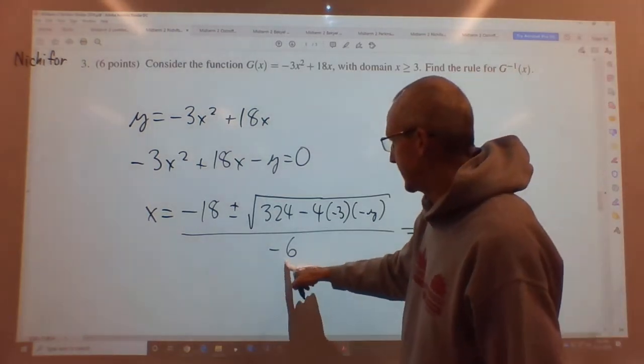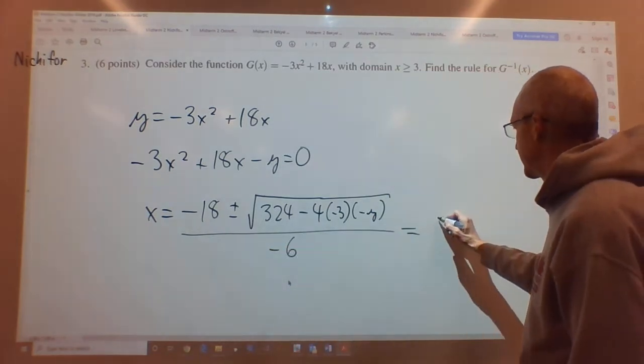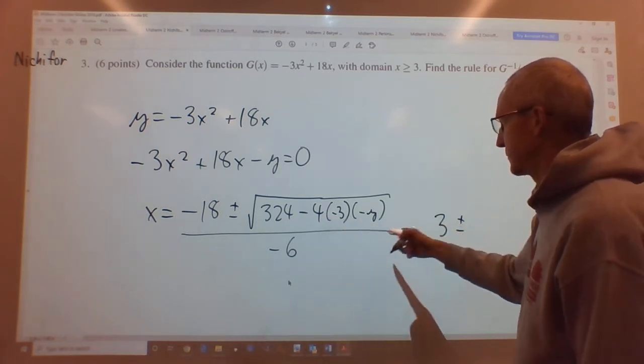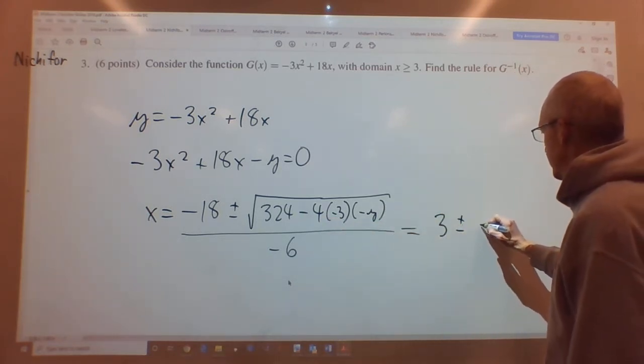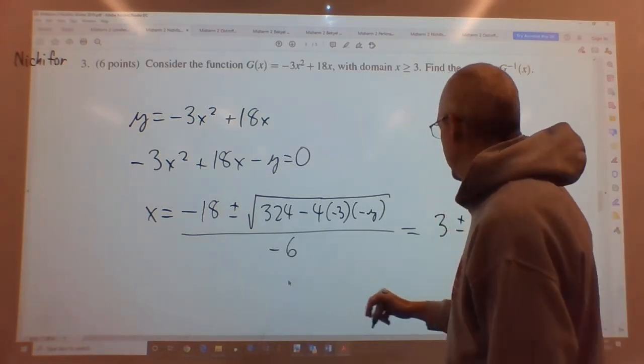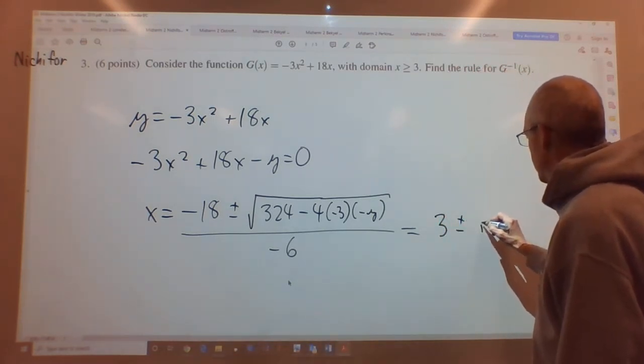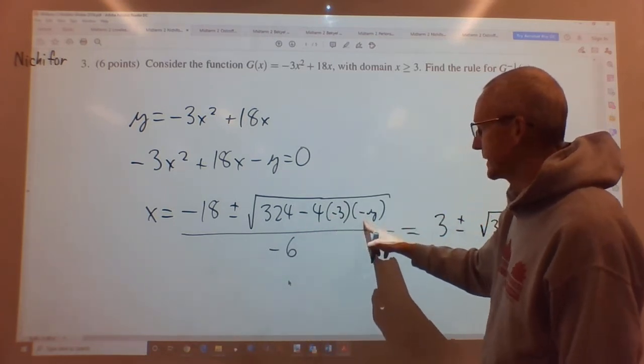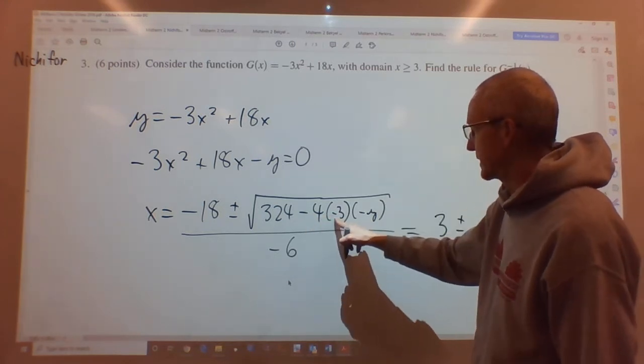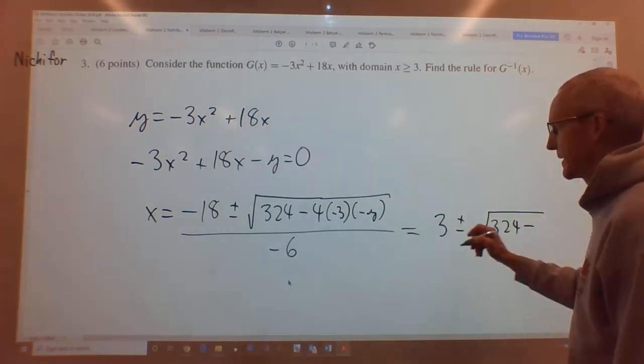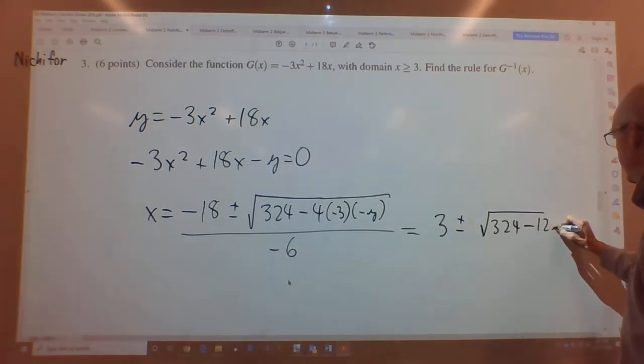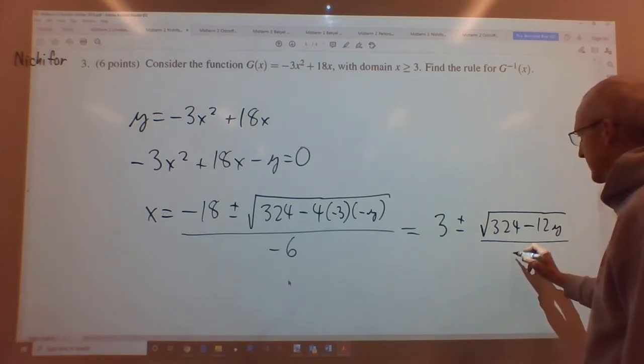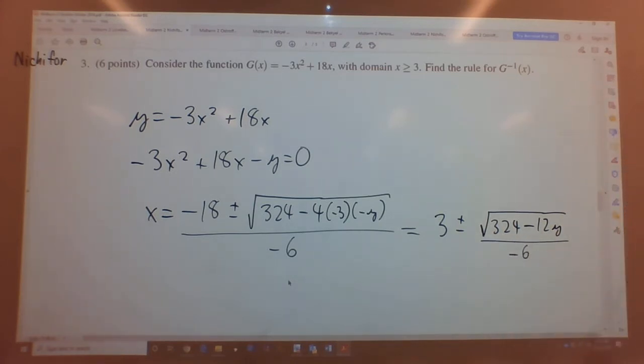This thing then is negative 6, negative 18, but that's 3. That's nice. So 3 plus or minus. Inside the parentheses, we have the negative 6 in the bottom. So it's the square root of 324. It's minus, minus, minus, so it's going to be a minus. Those cancel, we have a minus. So minus 12y. And this is divided by negative 6.